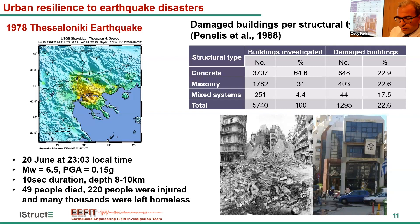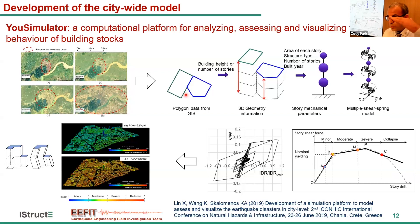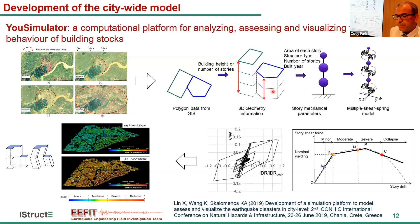How does the platform work? Overall, this slide shows all the modules of the platform. We first identify the regional buildings using a GIS database to extract the polygon of each building — the roof floor plan. By implementing additional information like building height, number of stories, and structural type, we create a 3D geometry information database, based on which we establish the mechanical parameters of every story. We then generate a multi-shear spring model with the shear force-displacement-deformation relationship at every story.